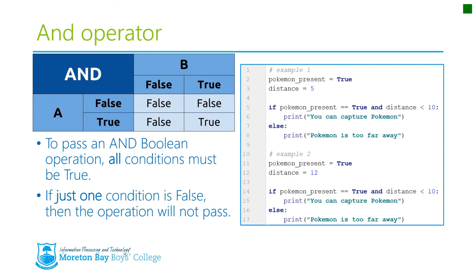In the second example, Pokémon present is also set to true, so that's still true. But in this case, the distance is 12, which is not less than 10, so that gives us false. True and false returns a value of false, so it doesn't pass this condition and comes down to the else, printing that the Pokémon is too far away.